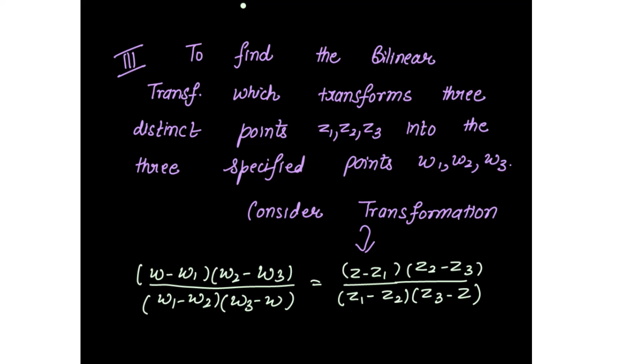To find the bilinear transformation which maps three distinct points z1, z2, z3 into three specified points w1, w2, w3, we consider the cross ratio equality: w minus w1 over w1 minus w2, times w2 minus w3 over w3 minus w, equals z minus z1 over z1 minus z2, times z2 minus z3 over z3 minus z. Whenever mapping points are given, you start from this transformation.